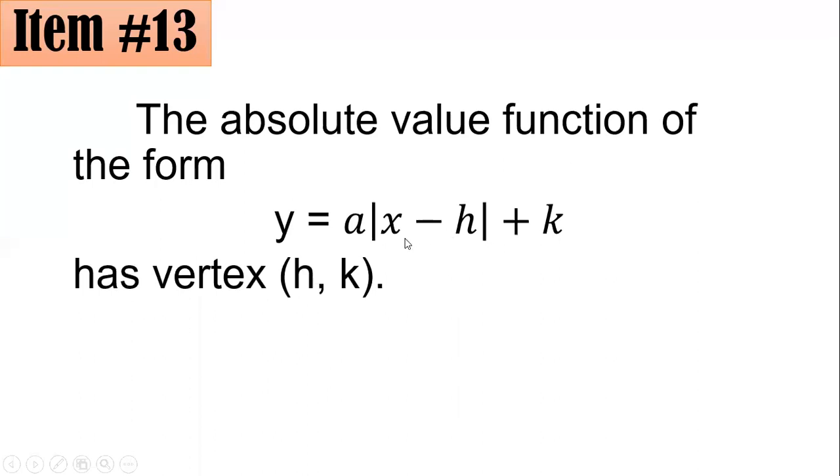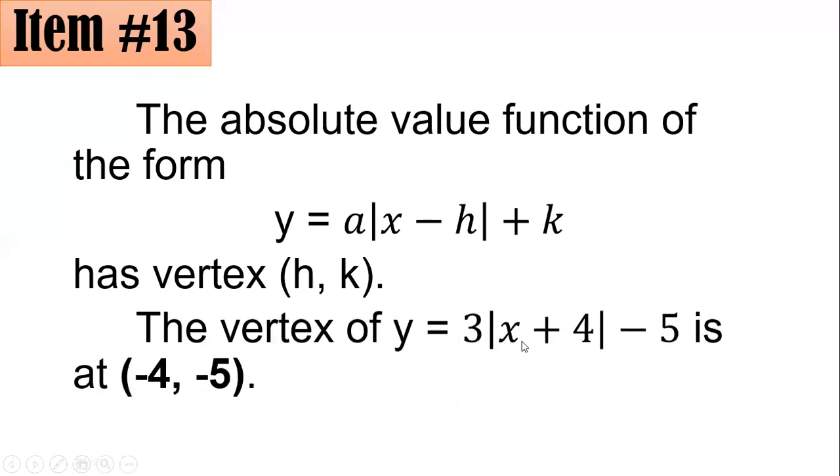So what you will do is you will equate this one inside into 0. That's why if I have here x + 4 = 0, then x = -4. That's the reason why your h here is negative 4. And whatever the value of this one outside, that will be k. So I have here negative 5. That's why negative 5 is also copied here. Hence, letter B is the correct answer. Negative 4, negative 5.